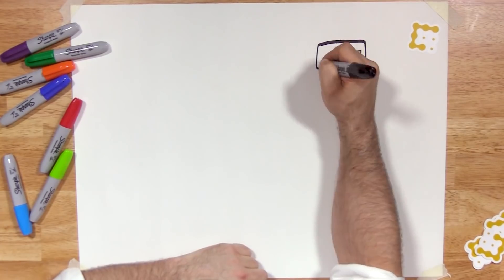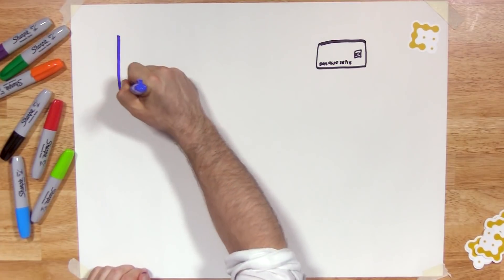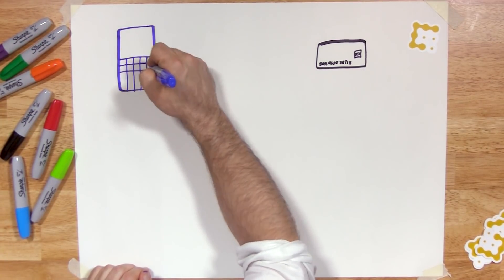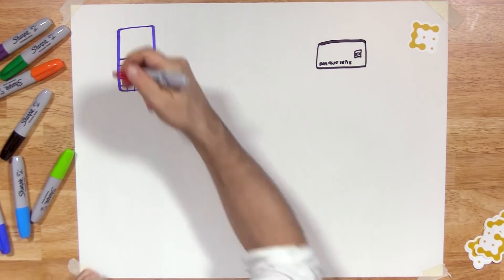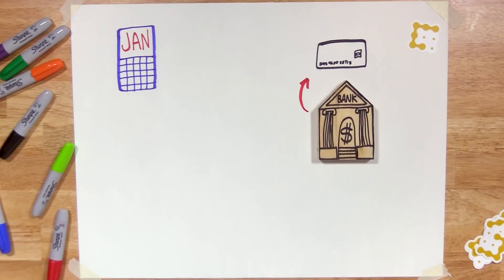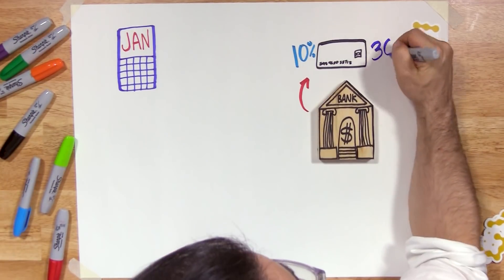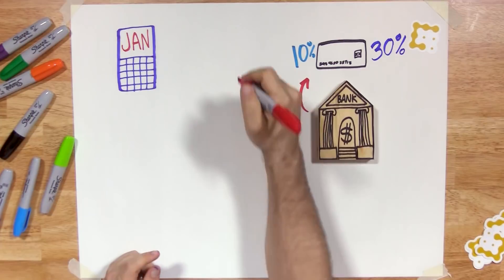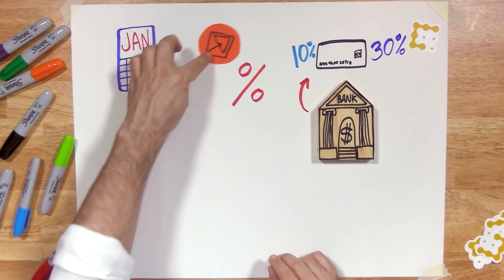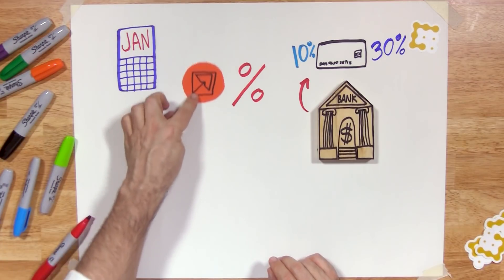Much like a traditional credit card, DAI loans accrue interest. In January, the interest rate, which is called the stability fee, for a DAI loan was half a percent. Sounds like a good interest rate compared to the range banks charge, anywhere from 10% to 30%, depending on a person's credit score. But that low rate hasn't remained. Over the last couple months, DAI interest rates have fluctuated dramatically.